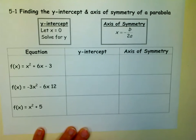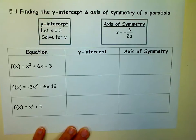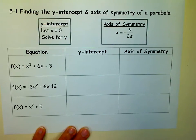Greetings, this is M-squared, and we are going to talk about finding the y-intercept and the axis of symmetry of a parabola, or quadratic equation.